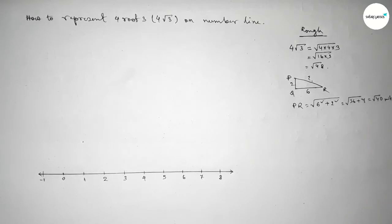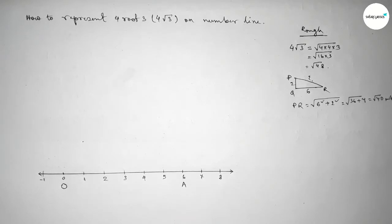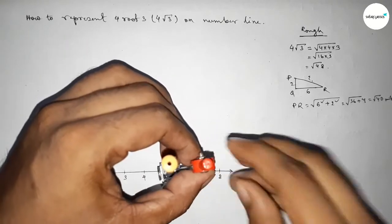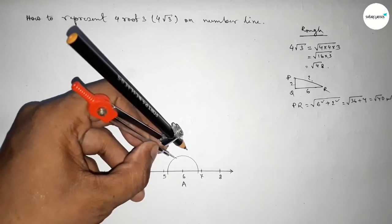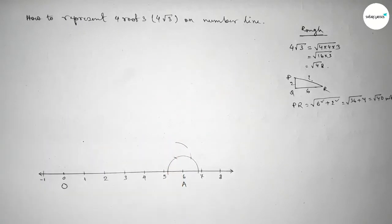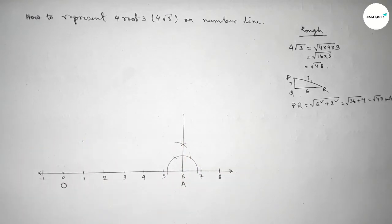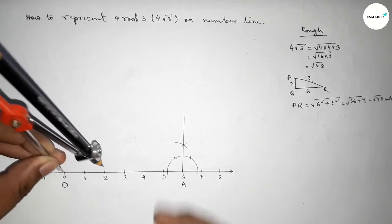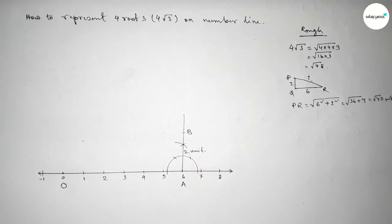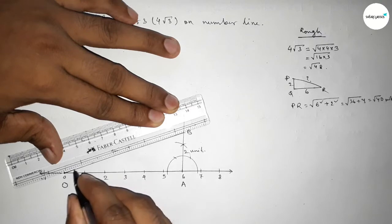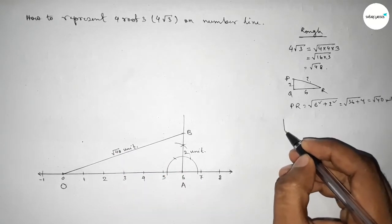Now applying this concept between 0 and 6. Taking point 0 and point A. We have to draw a 90-degree angle on point A using a compass. Drawing arcs with the same length to get the perpendicular. Taking 2 unit length, putting the compass and marking point B. Joining O and B: from right angle triangle OAB, the hypotenuse OB = √40 units.